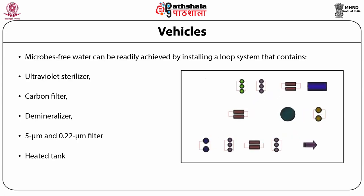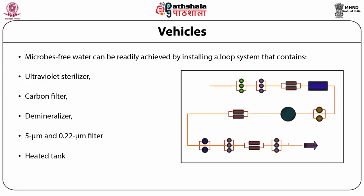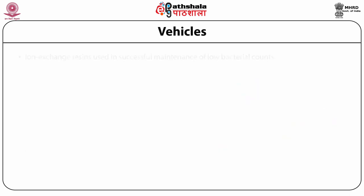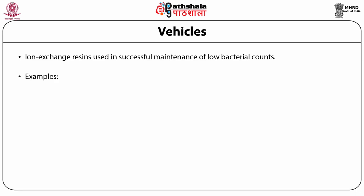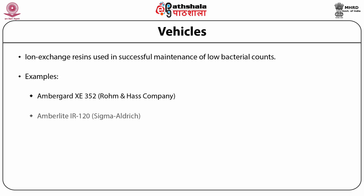It must be ensured that flow water does not exceed the sterilizing capacity of the ultraviolet system installed. Ion exchange resins used in the water systems are important for successful maintenance of low bacterial counts. An appropriate example of the mixed resin bed would be Amberguard XC352 prepared by Rome and Hash company, and Amberlight IR122 supplied by Sigma Eldridge. The former is a large-pore microreticular type 1 quaternary ammonium ion exchange resin, effective for a wide range of flow rates and for many different bacterial strains. IR120 is a strongly acidic cation exchange resin that balances the chemical equilibrium of the water.